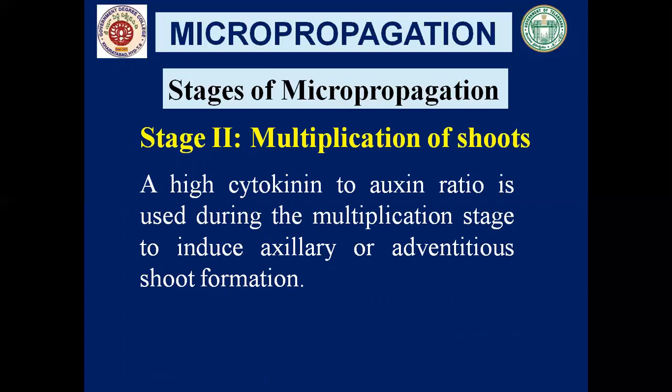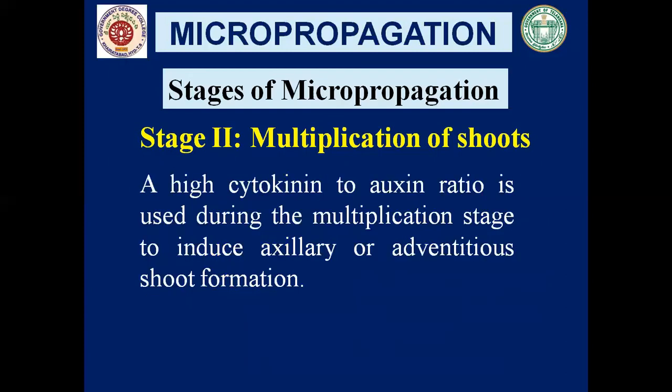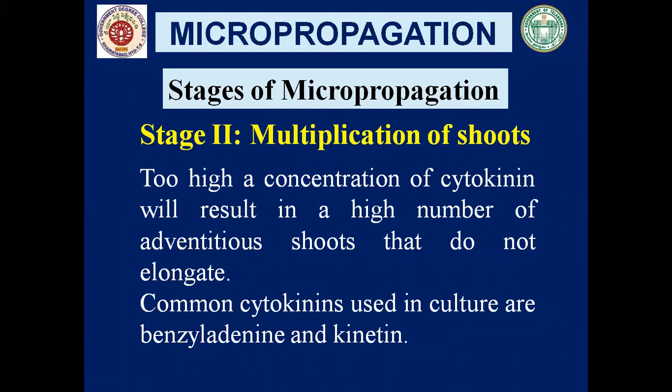Multiplication of shoots is done when appropriate plant hormones are added to the culture medium. A high cytokinin to auxin ratio is used during the multiplication stage to induce axillary or adventitious shoot formation. For adventitious shoots-mediated multiplication, a high amount of cytokinin relative to auxin is added. A very high concentration of cytokinin results in a high number of adventitious shoots, but they do not elongate. Cytokinins used in this culture are benzyl adenine and kinetin.